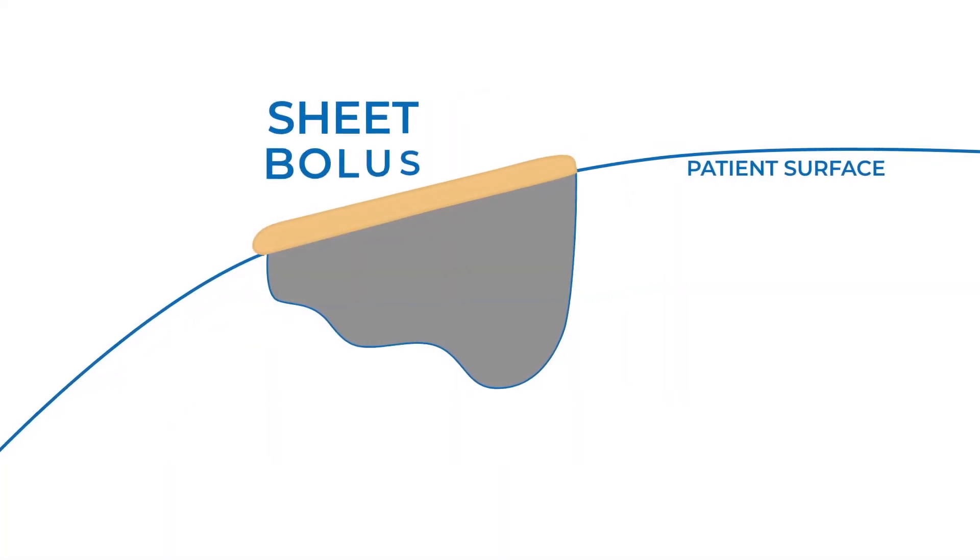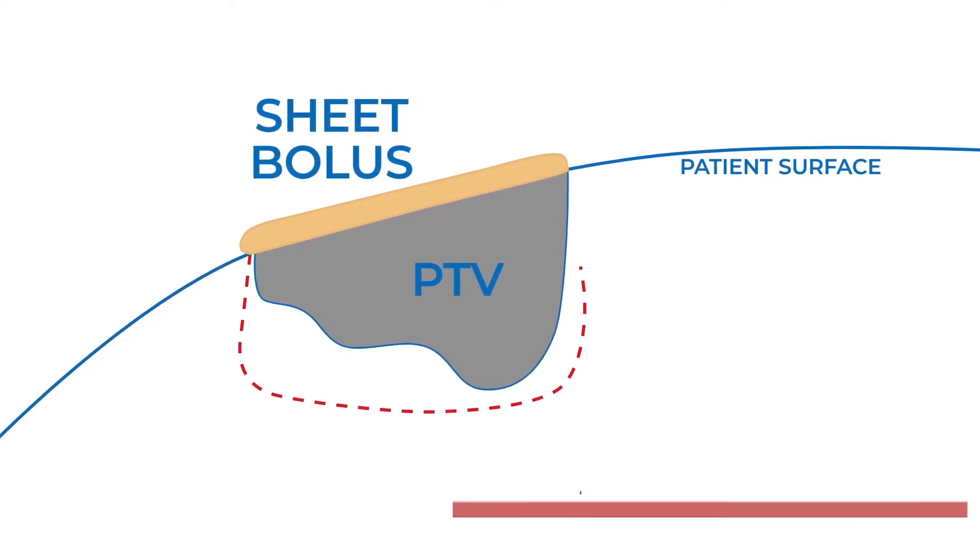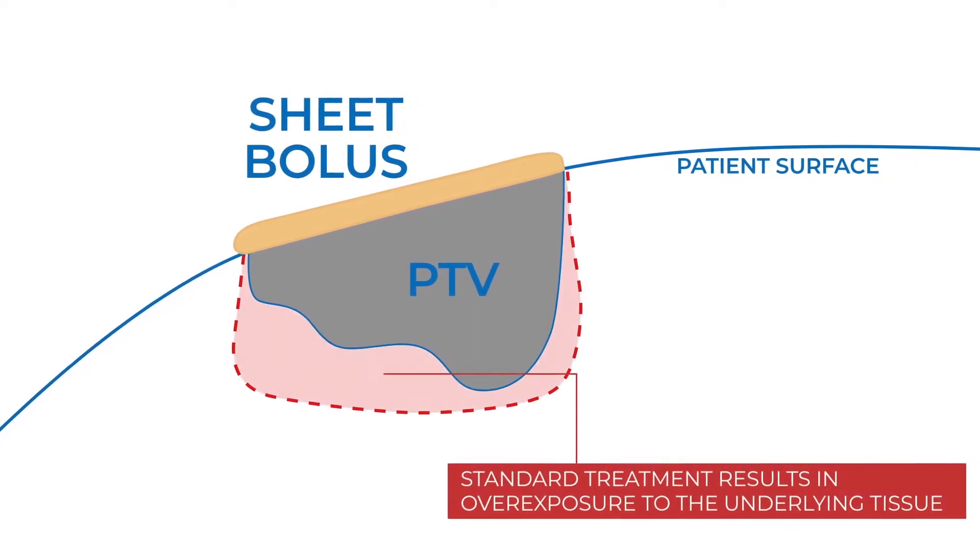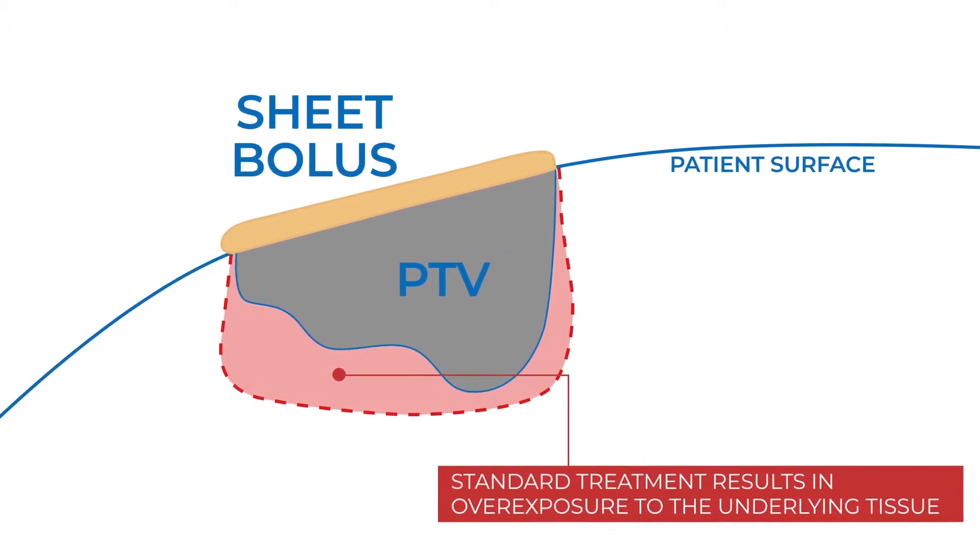Typically, distal coverage of the PTV is non-conformal due to the inability to modulate the electron beam, resulting in an unnecessarily high dose to immediately underlying critical structures and tissues.